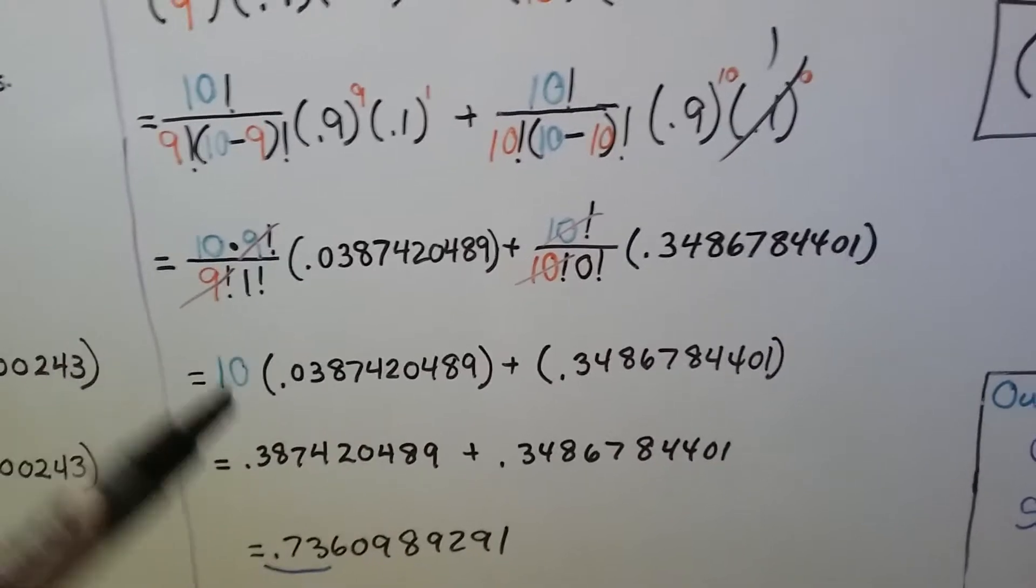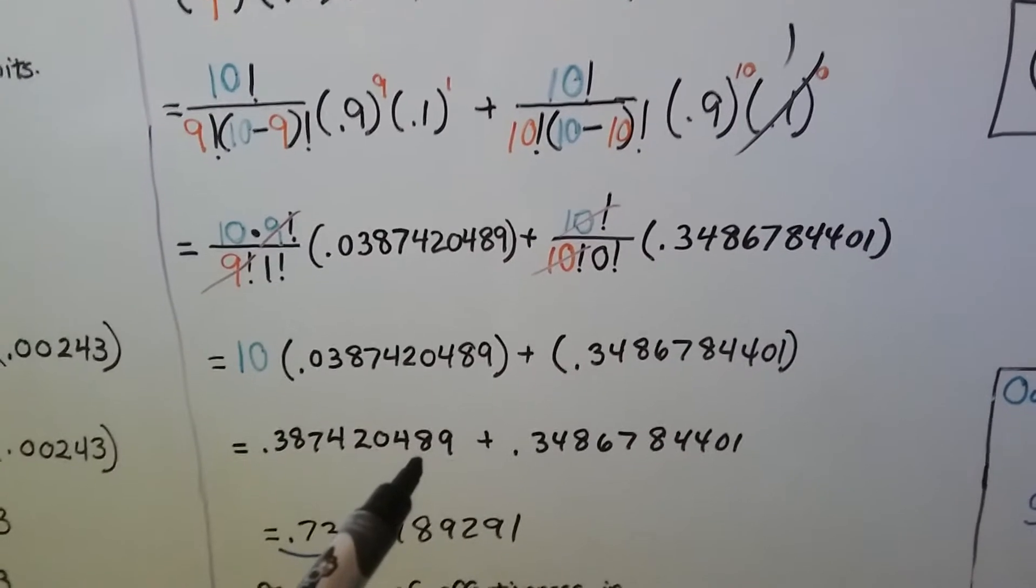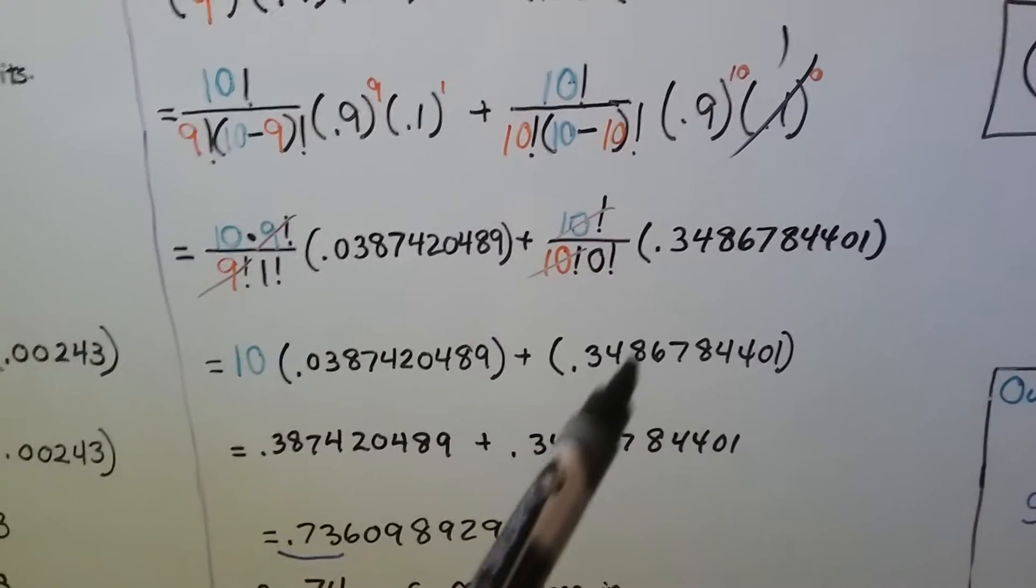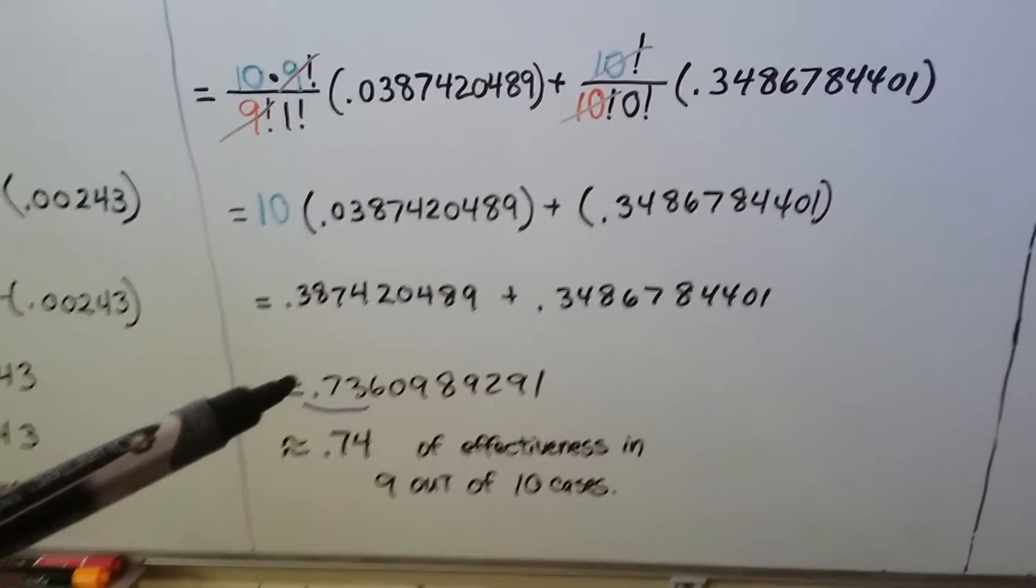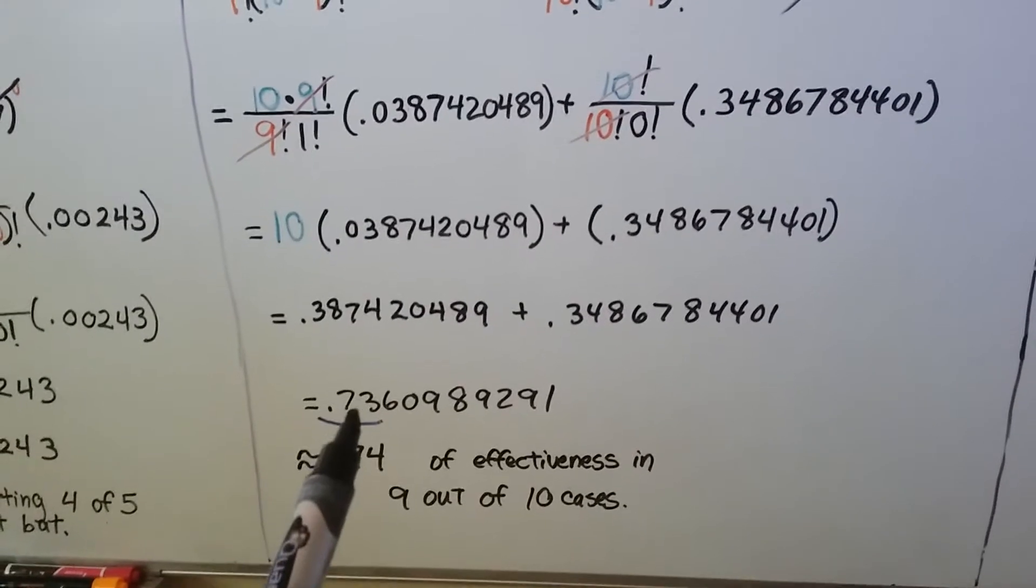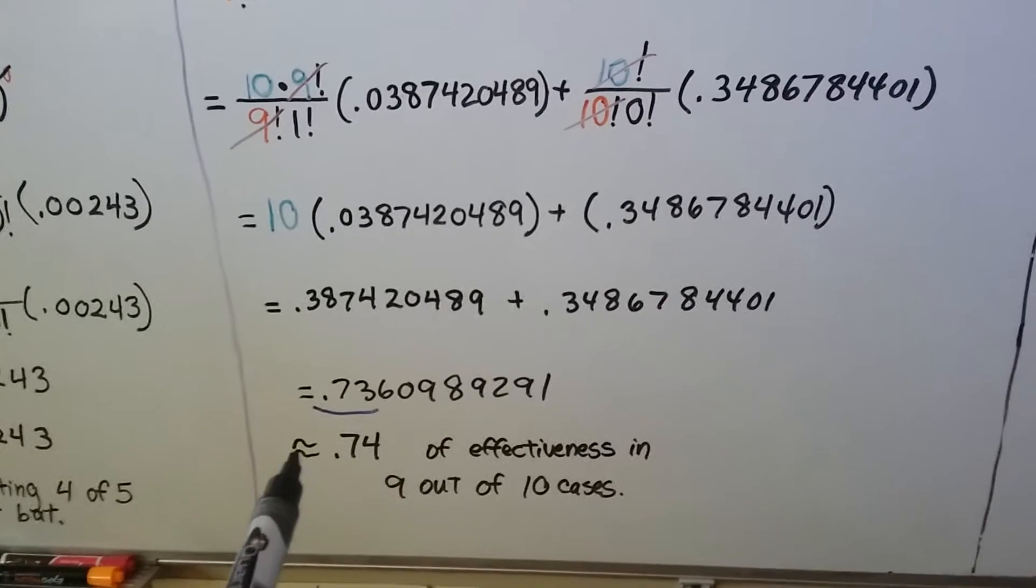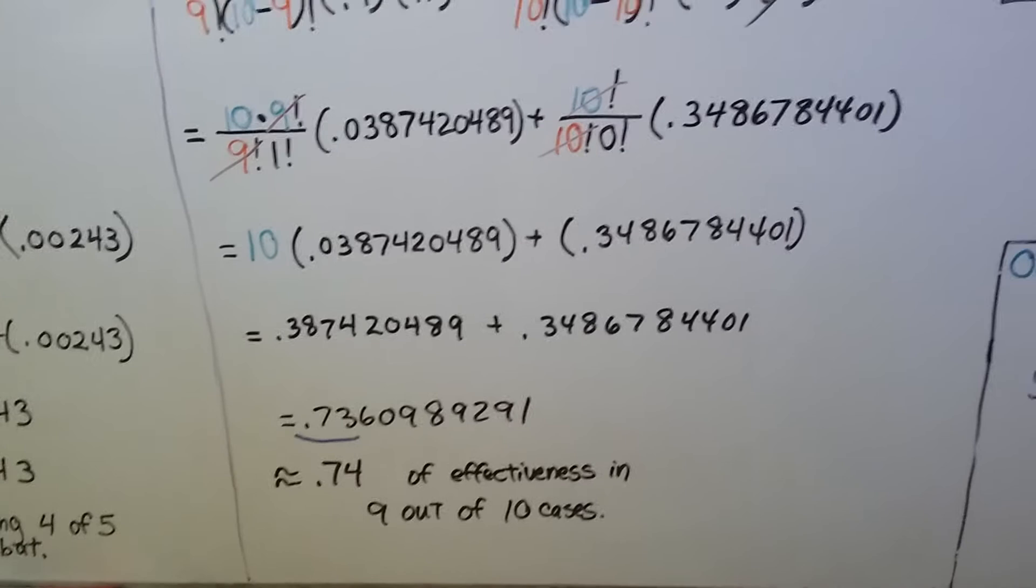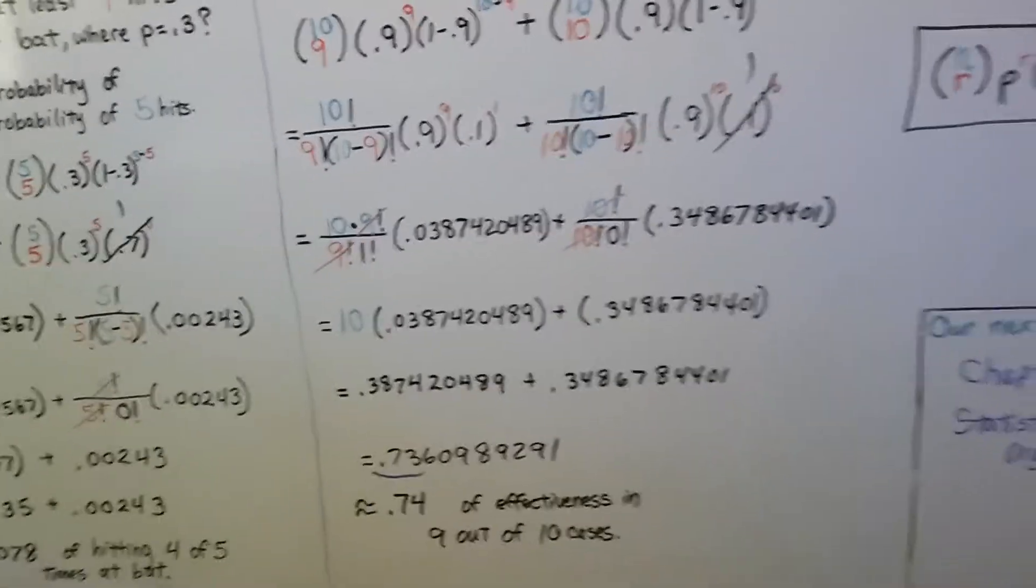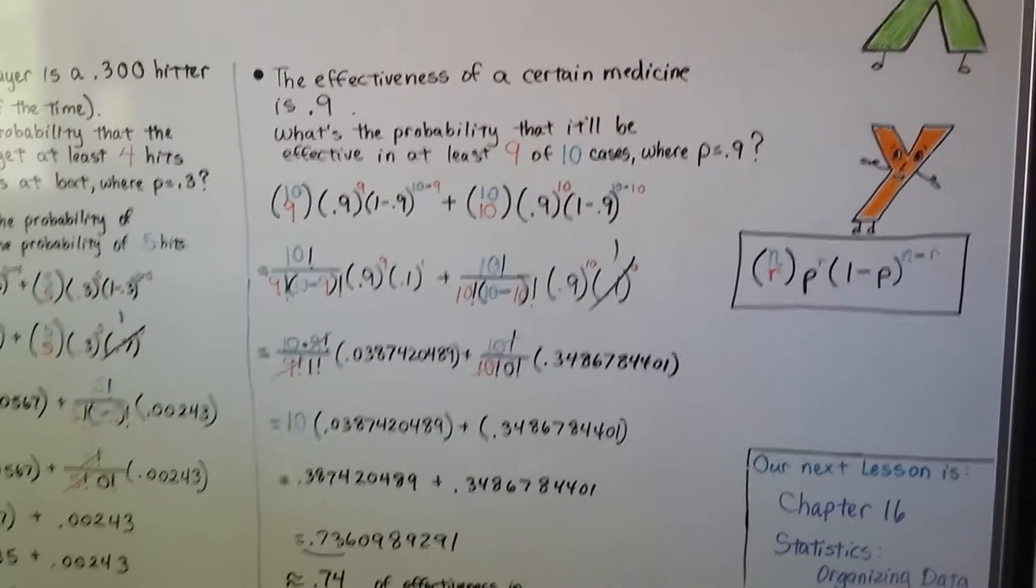We multiply 10 times our nice long decimal and we get this nice long decimal. We add it to this one and we get this nice long decimal. We can round it to 0.74 because of that 6. Put an approximation sign. So 0.74 of effectiveness in 9 out of 10 cases for that medicine. That's the effectiveness of it.